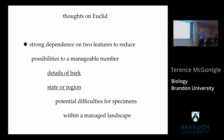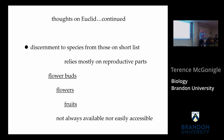Thoughts on EUCLID: there is a strong dependence on two features to reduce possibilities to a manageable number — details of bark and state or region. That gives the short list. But there are potential difficulties in a managed landscape where you don't know if a tree is from that part of the world or introduced. Once you get to your short list, there's a strong reliance on reproductive parts — flower buds, flowers, and fruits — which are not always available. You may find yourself looking on the ground for a fallen branch, or trying to knock parts off the tree. At the National Arboretum they even use a slingshot to get flowers and fruits down.